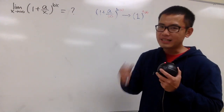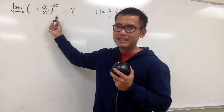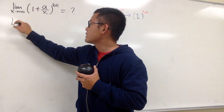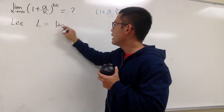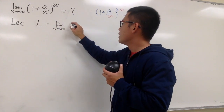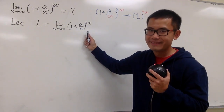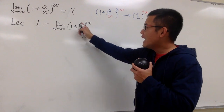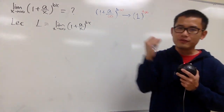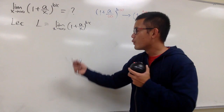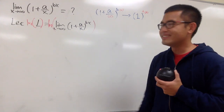This is the work we have to do. Let L be this limit. So L equals the limit as x goes to infinity of (1 + a/x)^(bx). This is hard because we have x in the base and also x in the exponent. Whenever we have a function raised to a function, the usual approach is to take the natural log on both sides — it's nicer this way.